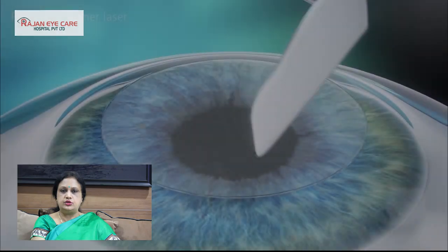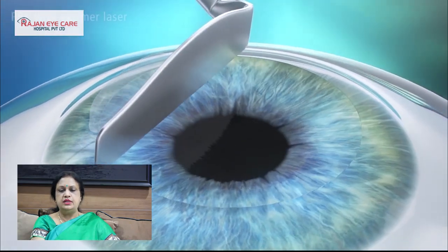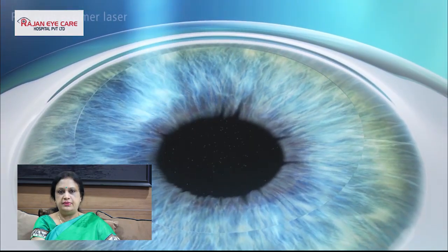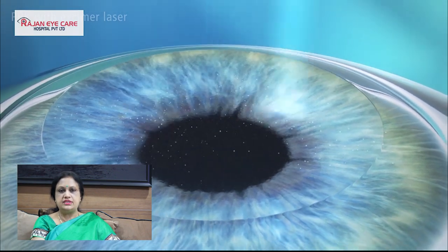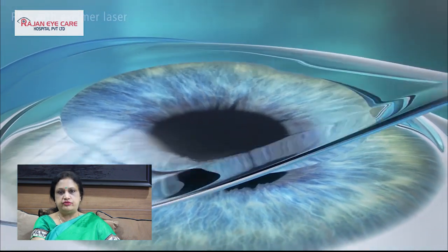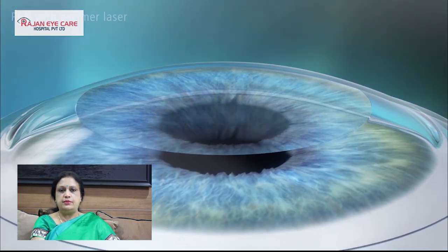So what happens in these conditions and what are the different types of modalities available today to make you see without glasses or contact lenses? The first procedure introduced in refractive surgery was PRK, or photorefractive keratectomy. In PRK, the top layer of the epithelium is removed and the excimer laser is used to ablate — meaning remove some tissue from — the cornea in the second layer. The amount of tissue removed depends upon the amount of correction needed.